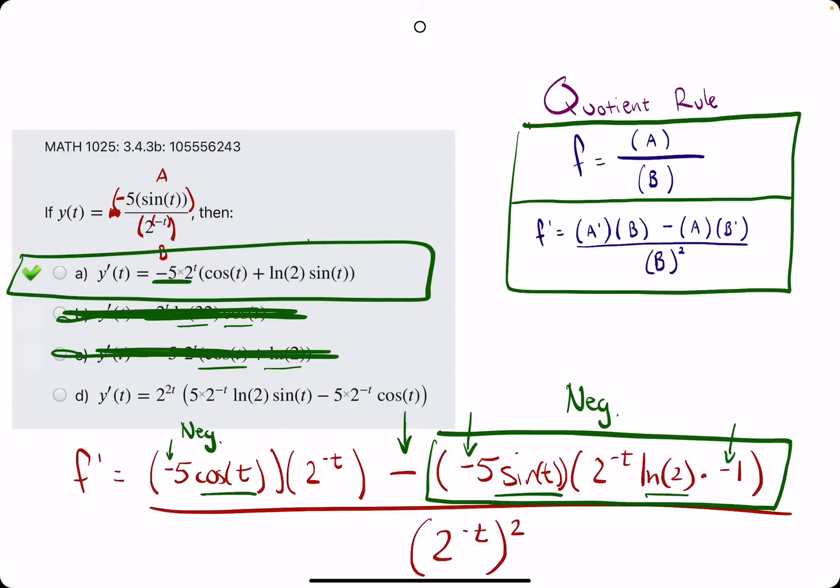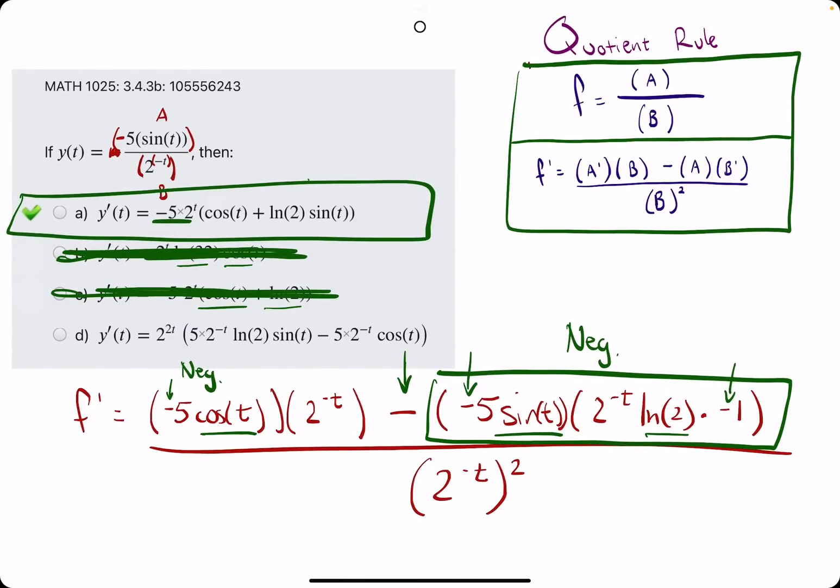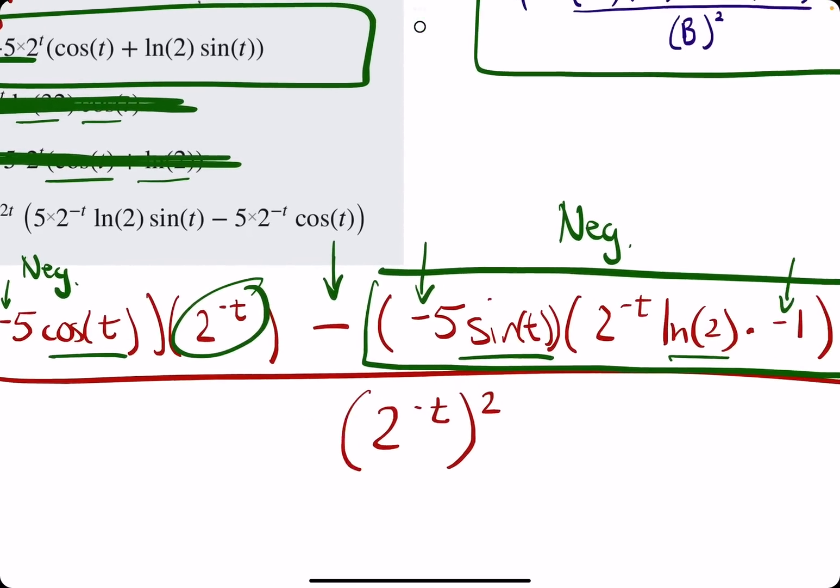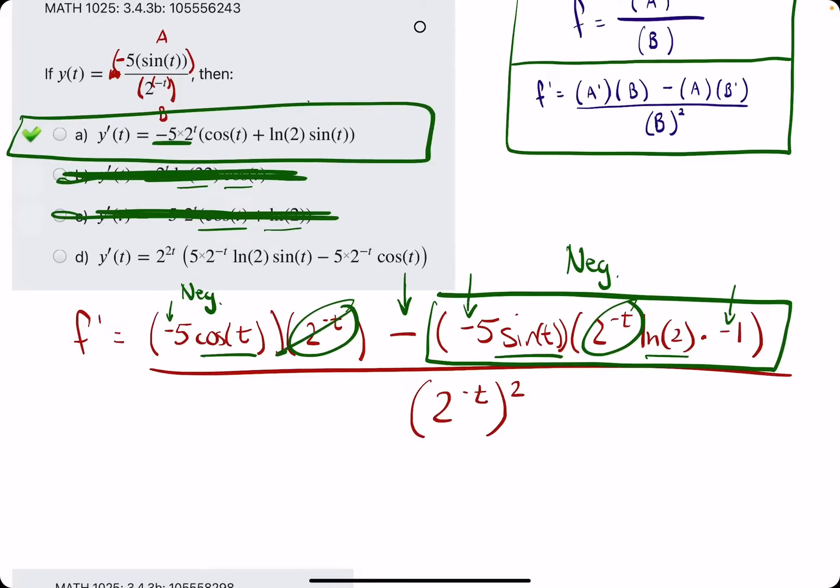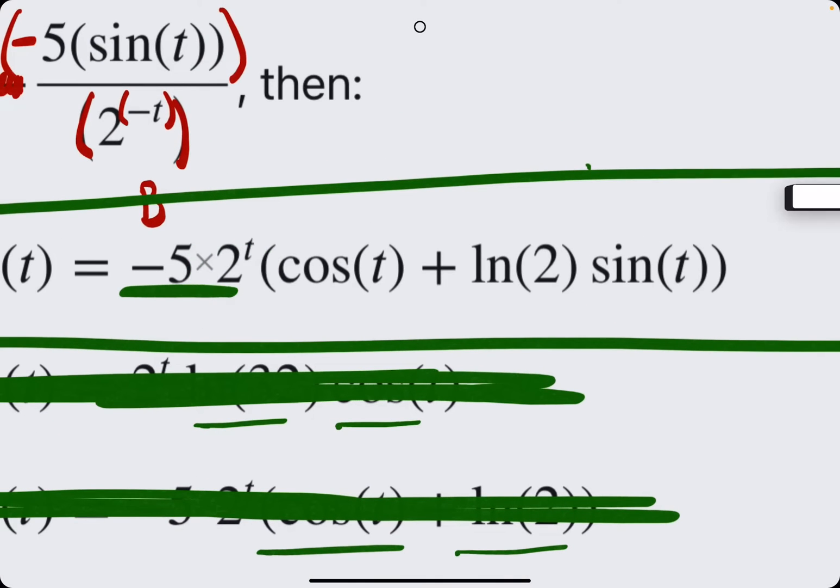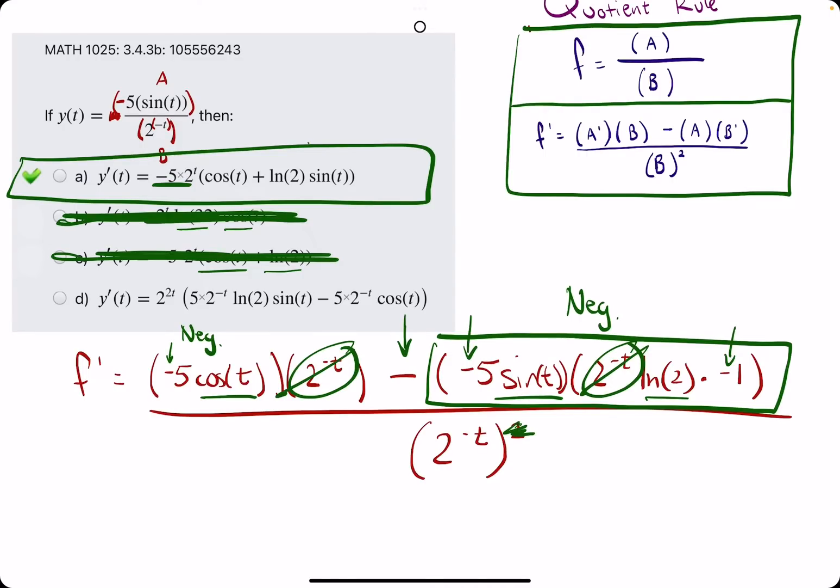Regardless of how they simplify it, just analyzing the signs could help you identify your answers. The rest of what they've done, basically, is starting with the 2 to the negative t's. They canceled one from each term, leaving 1 on the bottom since it was squared originally. And then 2 to the negative t is equivalent to writing 2 to the positive t up top. Then they factored out a negative 5, and then the 2 to the t from both terms. It leaves us with cosine, sine of t, and ln of 2. But again, the signs are the important pieces you need.